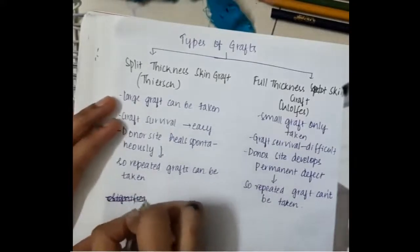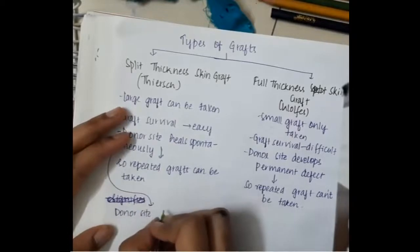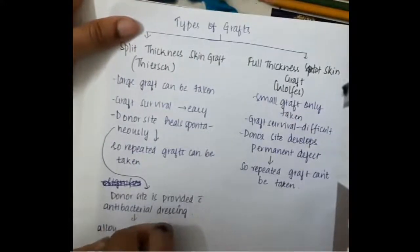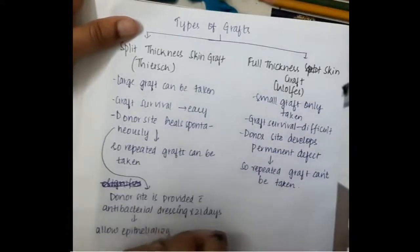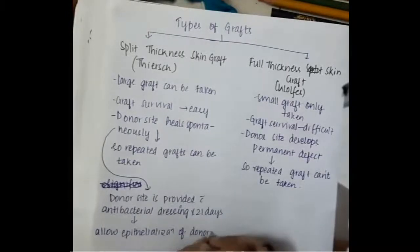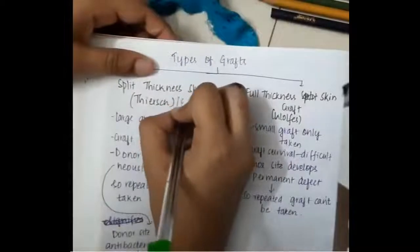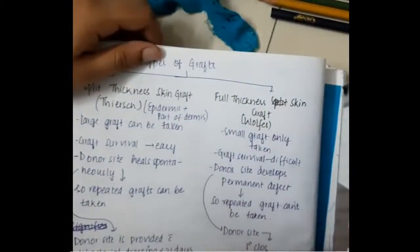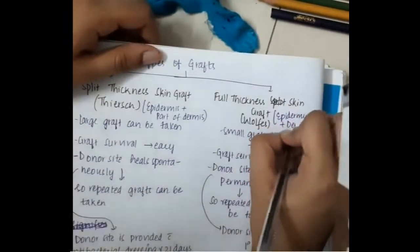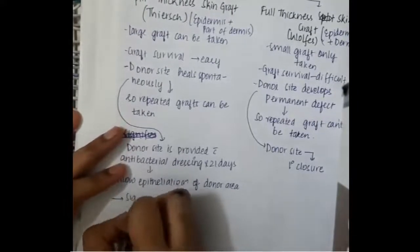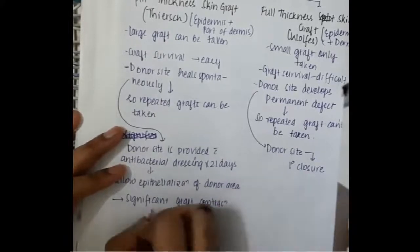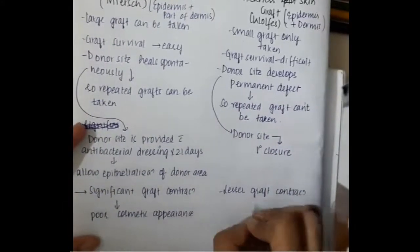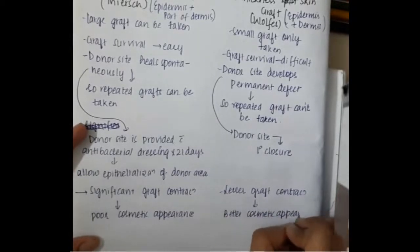In the Thiersch graft, the donor site is provided with antibacterial dressing for 21 days, after which epithelialization occurs in the donor area without infection. In the full thickness or Wolfe graft, we primarily close the donor site. Full thickness grafting includes both epidermis and dermis. In split thickness graft there is significant graft contraction, giving poor cosmetic appearance, whereas in full thickness graft there is lesser contraction and thus better cosmetic appearance.